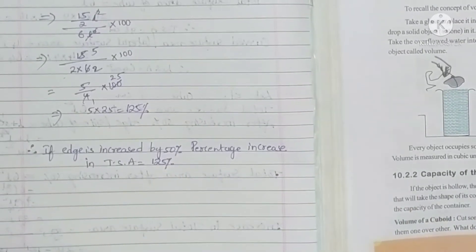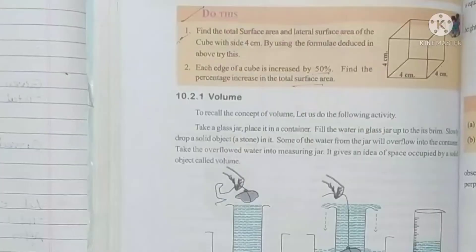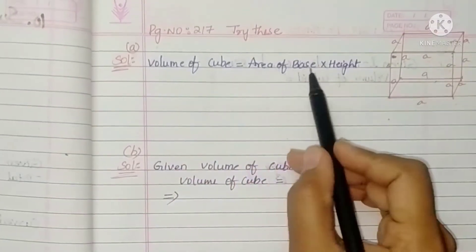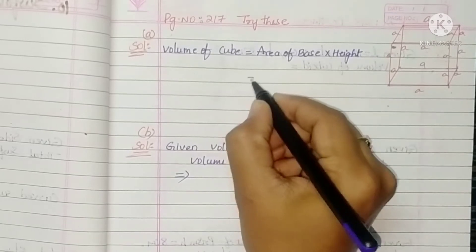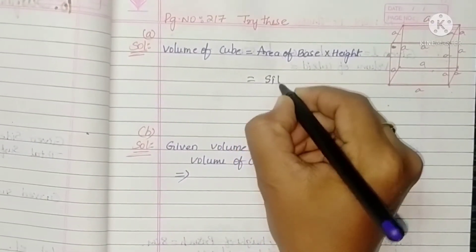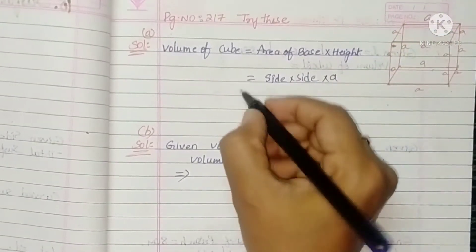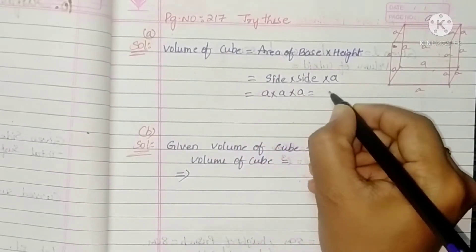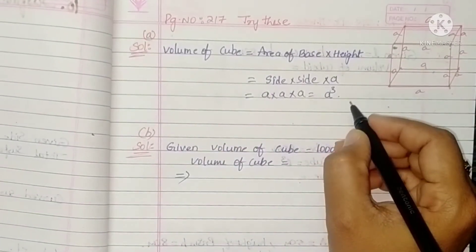Now, find the volume of a cube whose edge is A units. Volume of a cube means area of base × height. The base is in the shape of a square, so its area is side × side = A × A. Height is also A. So volume = A × A × A = A³. The volume of a cube is A³ cubic units.